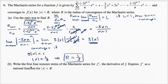Part B. Write the first four non-zero terms of the Maclaurin series for f prime, the derivative of f. Express f prime as a rational function for the absolute value of x being less than r, our radius of convergence.